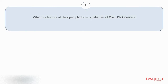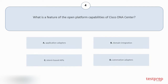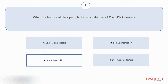Question number 4. What is a feature of the open platform capabilities of Cisco DNA Center? Your options are: A. Application adapters. B. Domain integration. C. Intent-based APIs. D. Automation adapters. The correct answer is option C.